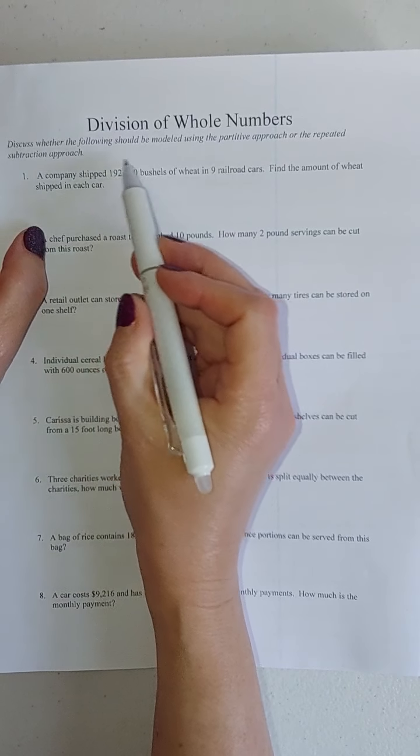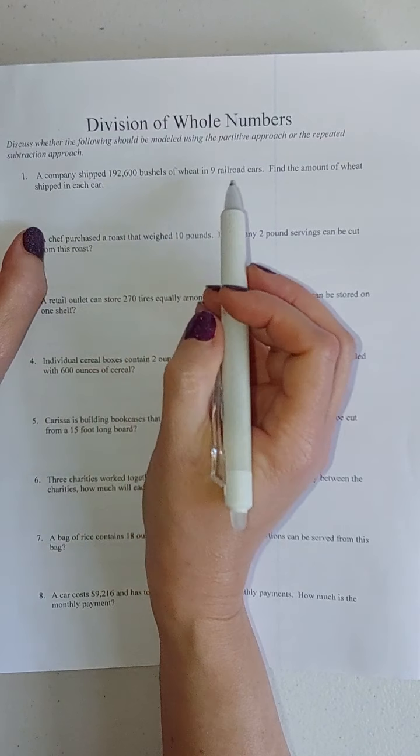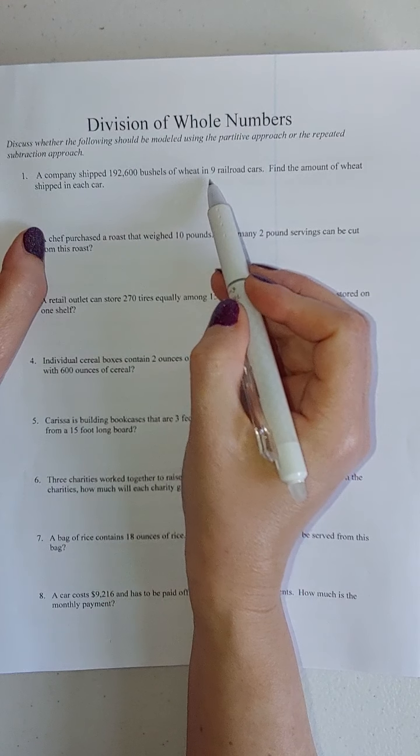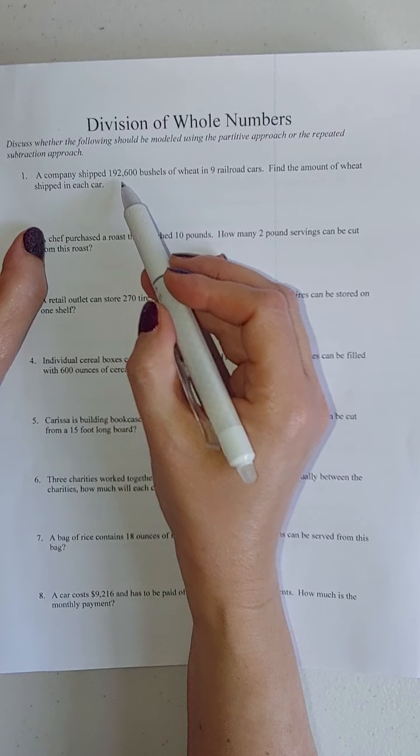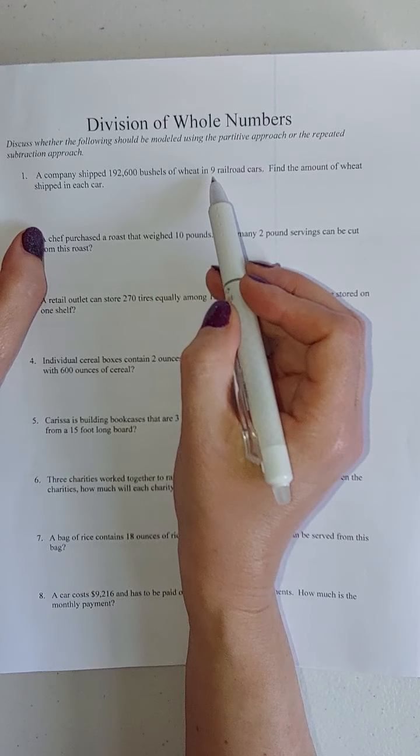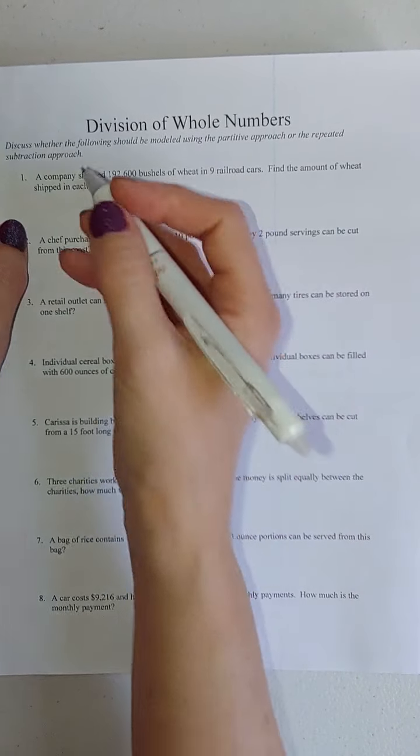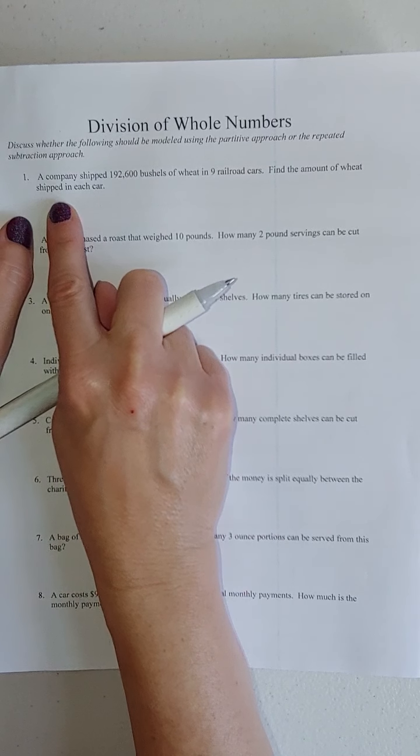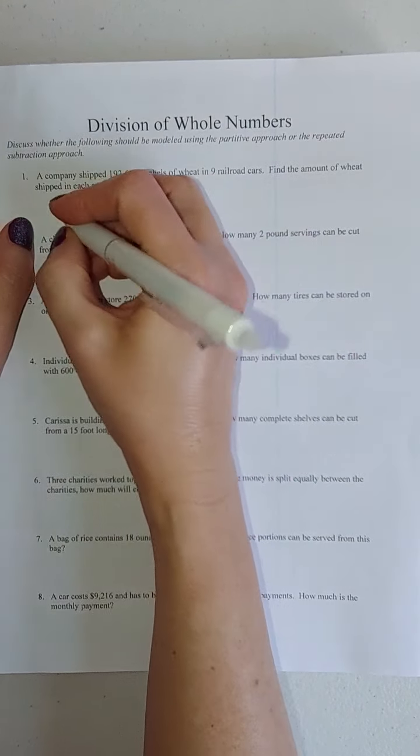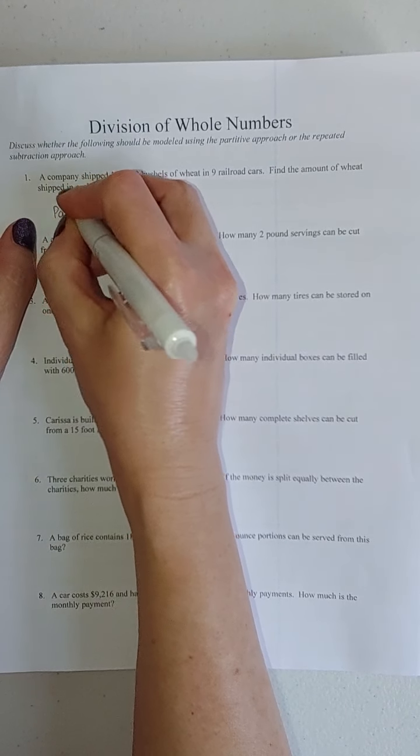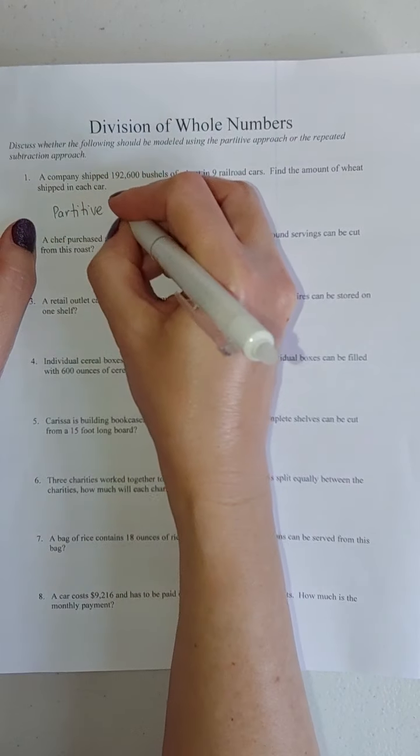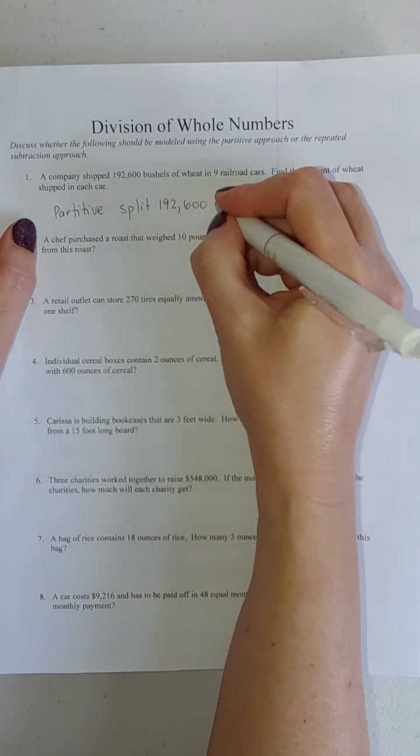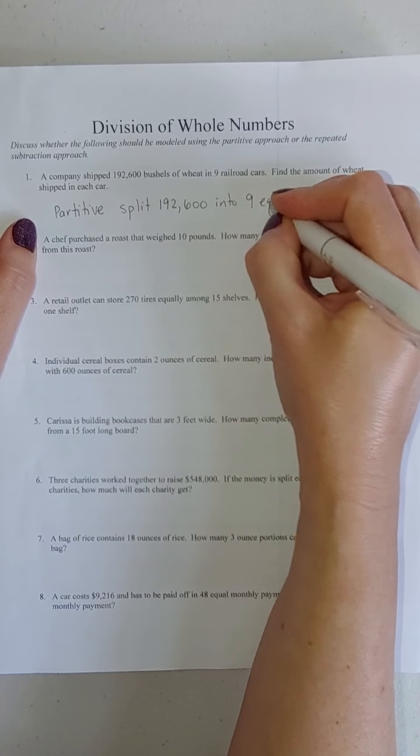A company shipped 192,600 bushels of wheat in nine railroad cars. Find the amount of wheat shipped in each car. Here's my total. Am I repeatedly subtracting nine from this? Or am I splitting this into nine groups? This is partitive because I'm going to be splitting this into nine equal groups.